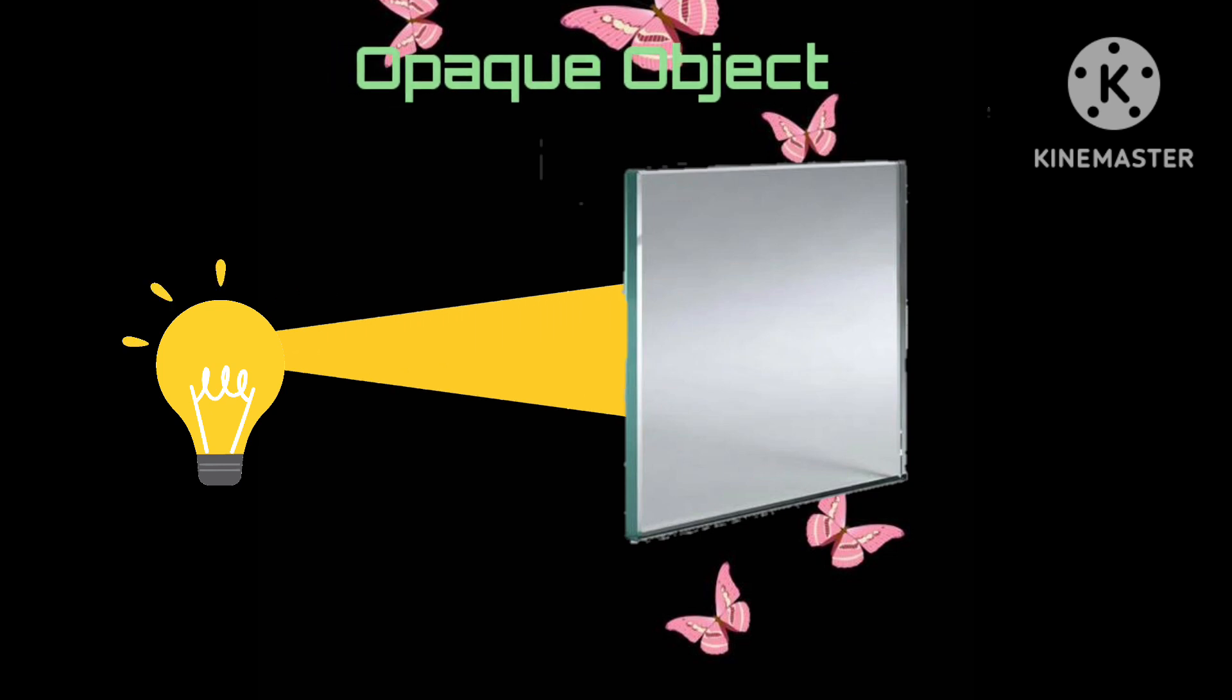Third one is opaque object. An object which does not allow passage to light is called an opaque object. We cannot see through this object.